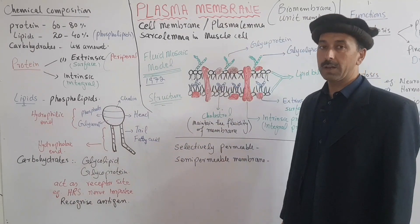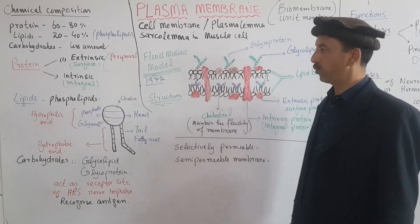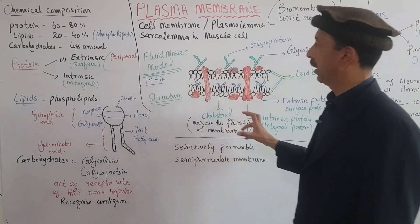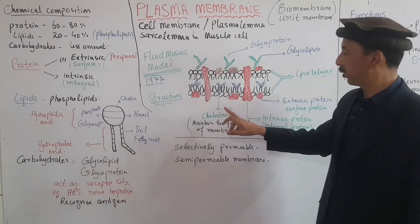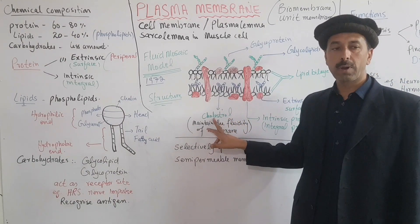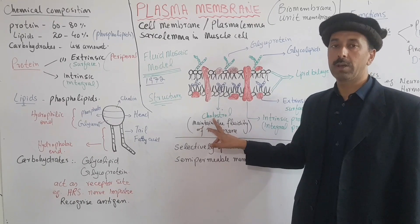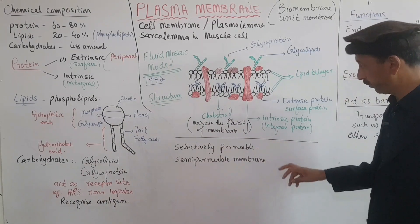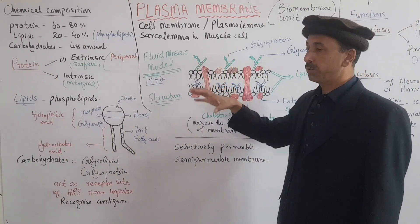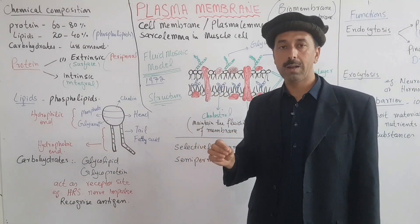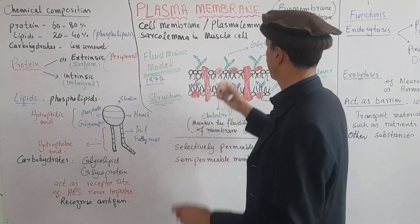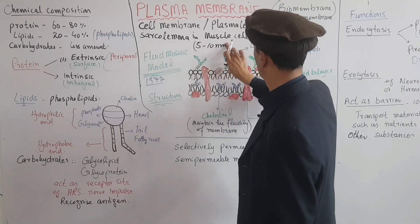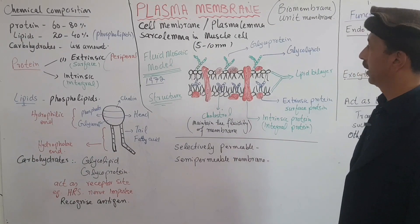Cholesterol is absent in prokaryotic cell membranes. The thickness of the plasma membrane ranges from 5 to 10 nanometers. This thickness is characteristic of the plasma membrane.